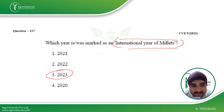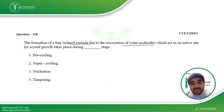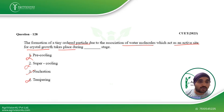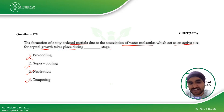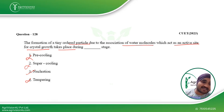Next: the formation of tiny ordered particles due to the association of water molecules, which act as active sites for crystal growth — this takes place during which stage? The options are pre-cooling, super-cooling, nucleation, or tempering. This is from chocolate manufacturing process. The stage described is nucleation, so the third option is the correct answer.